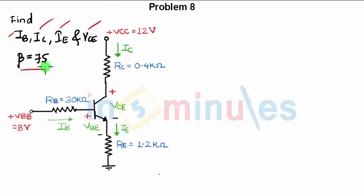The first step is to identify the base-emitter loop. Whenever we identify the base-emitter loop, we apply KVL to it and find the value of IB. Once you know IB, you can find IC and IE. To find VCE, we apply KVL to the collector-emitter loop.